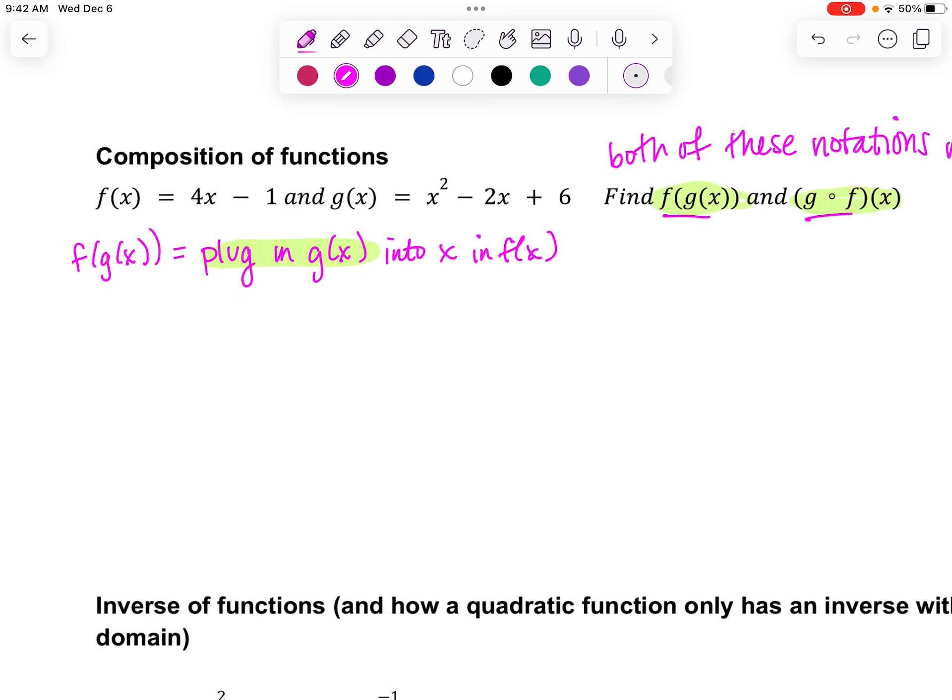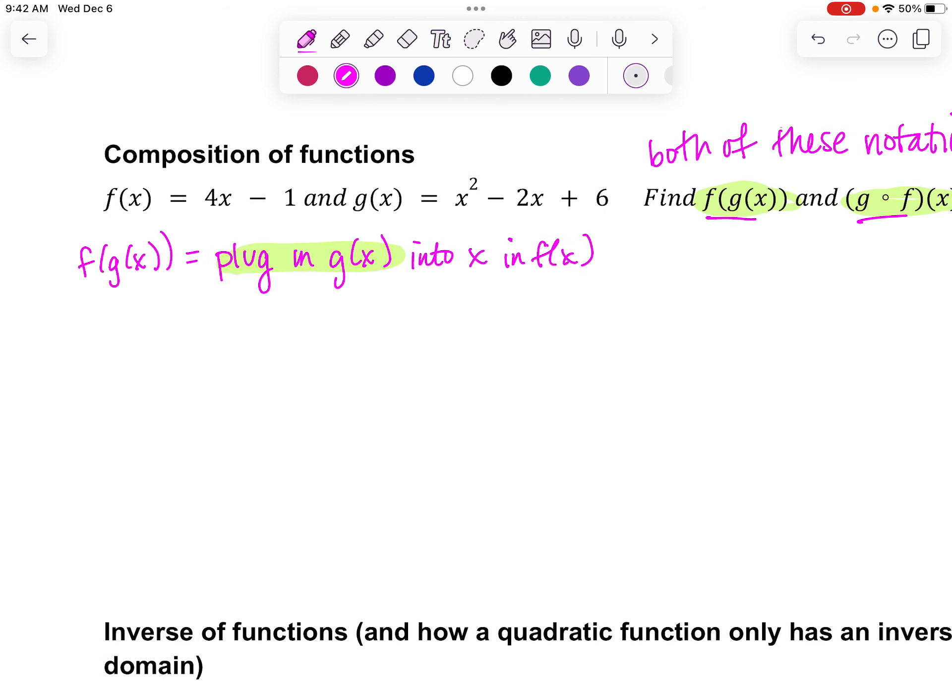So f of g means that I'm going to take the entire g equation and plug it in everywhere that I see x. So that would be like saying four times, and I'm going to take in this entire equation for g. So x squared minus 2x plus 6 and then minus 1. So you'll notice here that this x is what I have replaced here. All of the rest of the equation is still there. And then now I just go ahead and distribute. So 4x squared minus 8x plus 24 minus 1. And then that will give me my final equation.